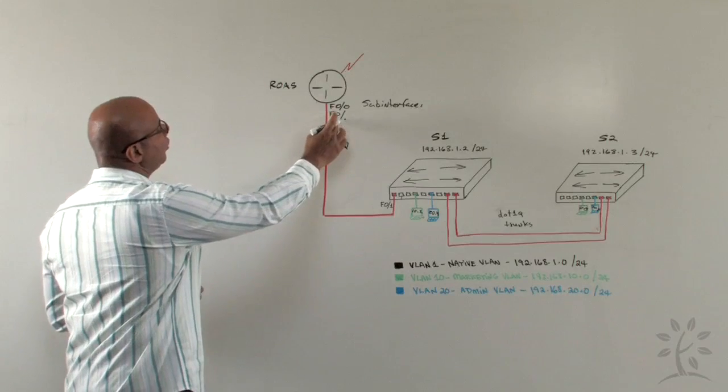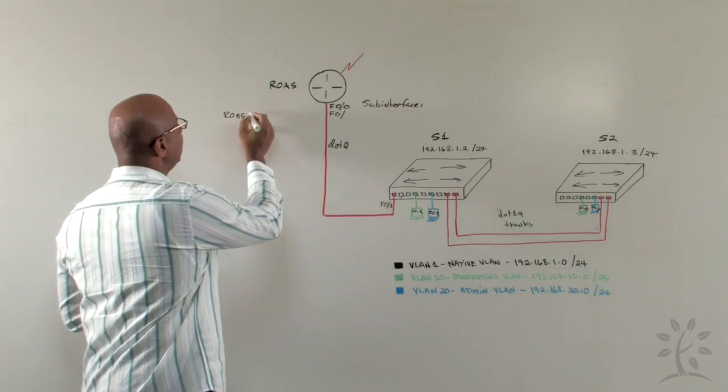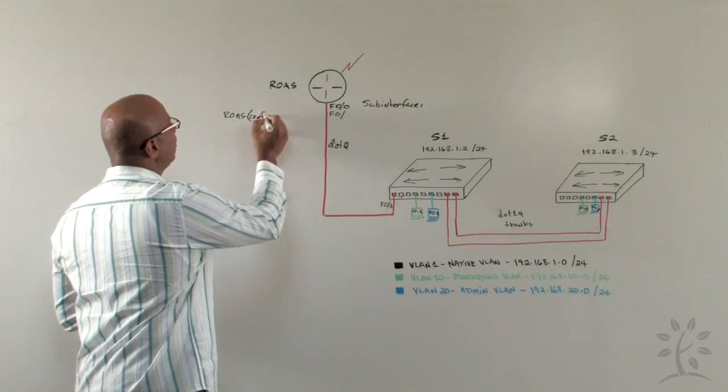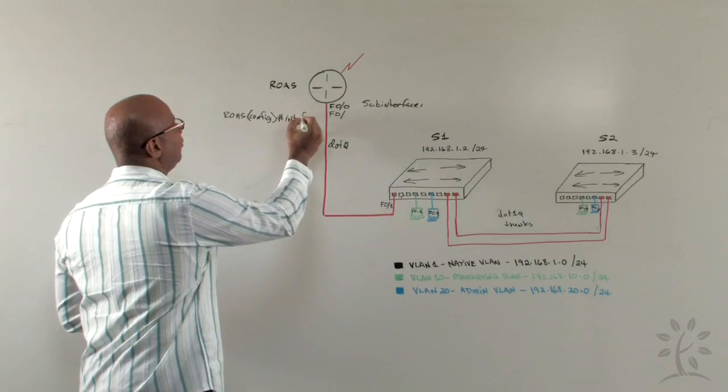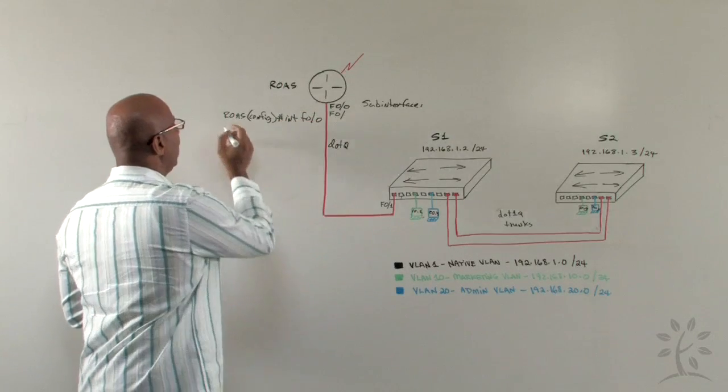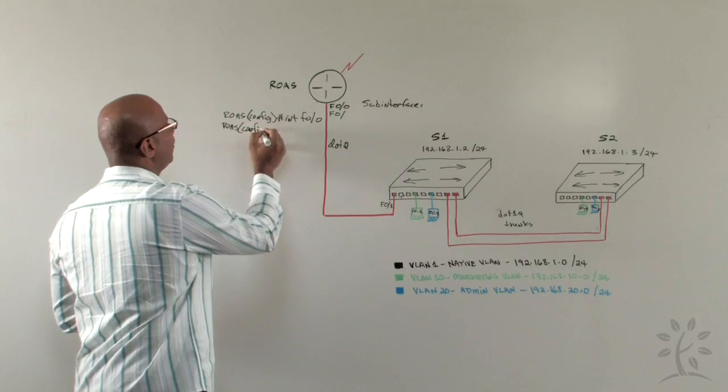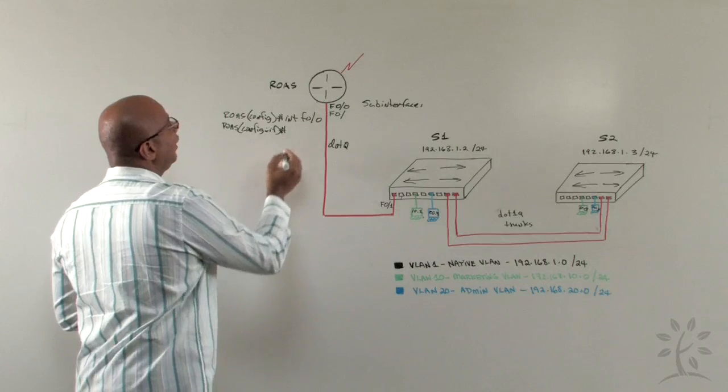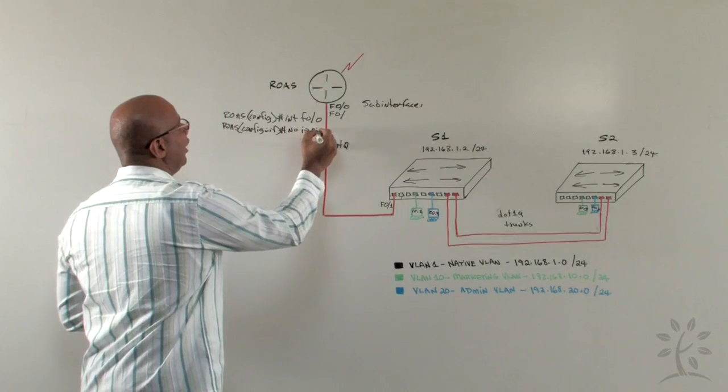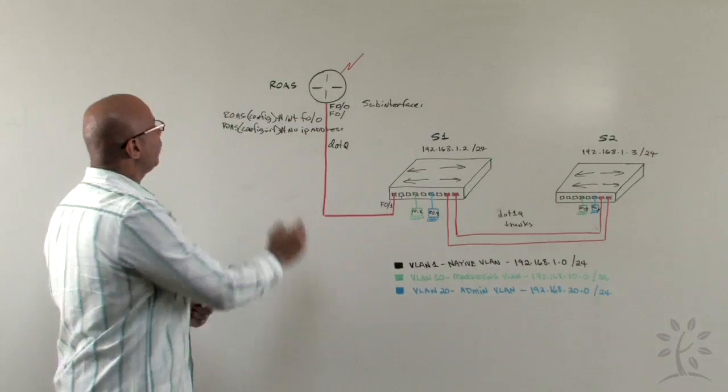So what we'd actually do, we'd go to the physical interface. Let's say that this was the router, ROAS, and we want to go into global configuration mode. Now we're going to go to interface FastEthernet00, and the prompt would now change to config-if for interface configuration mode. Then I want to put no IP address on it because I will configure sub-interfaces. Next, we're going to start creating our sub-interfaces.